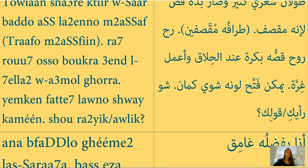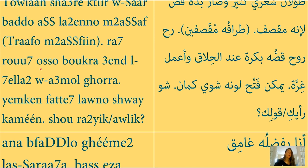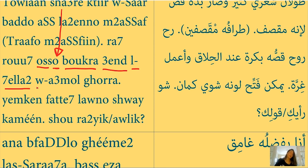'Rah rooh usso bukra and el-halla' — rah rooh means I will go, usso means I will go cut it. This 'o' again is referring to sha'ar, that's why it's masculine. 'Rah rooh usso bukra' — I will go cut it tomorrow. 'Ind el-halla'' — ind means at, el means the, and halla' means hairdresser. 'Rah rooh usso bukra ind el-halla'' — I will go cut it tomorrow at the hairdresser.